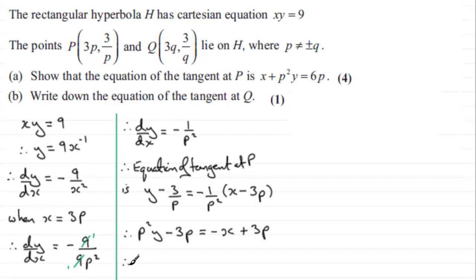So therefore, if I do that, I'm going to get X and then plus the P squared Y equals 3P plus another 3P, which equals 6P. And that's what we had to show.